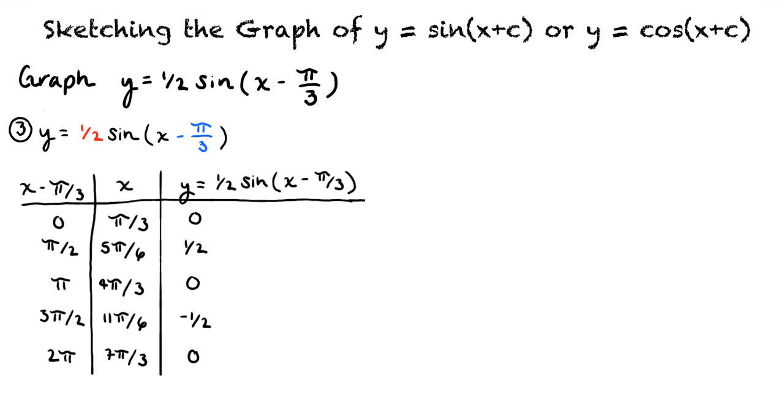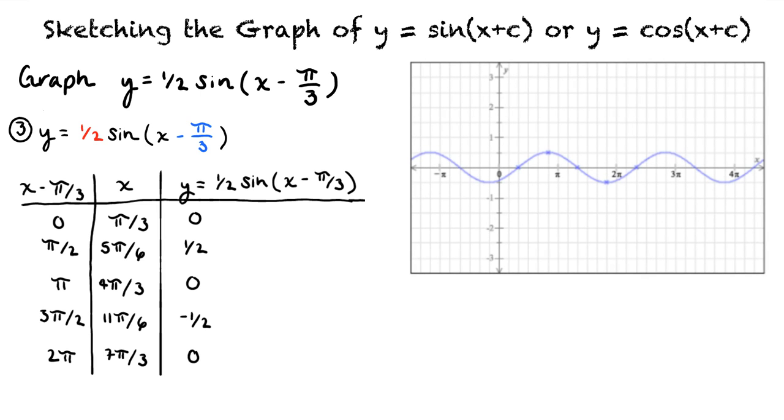Going from the graph of y equals one-half sine of x to y equals one-half sine of x minus pi over 3 results in a shift in the starting point of the cycle of the graph. This can be seen here in our final graph and our final answer.